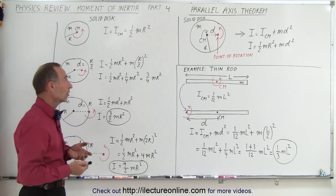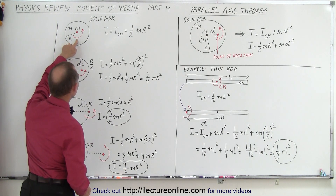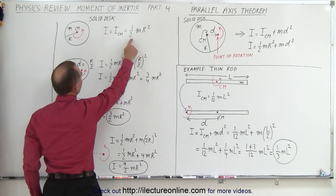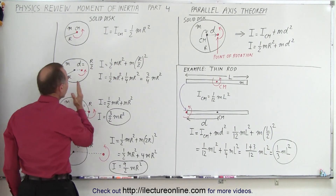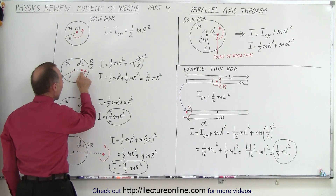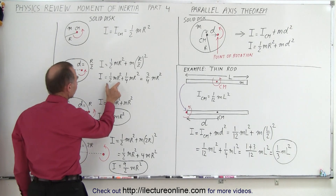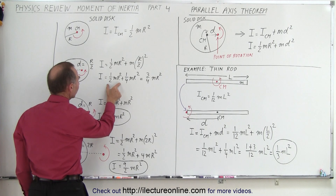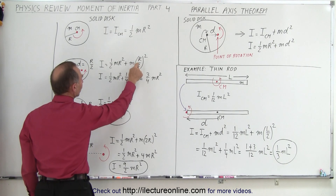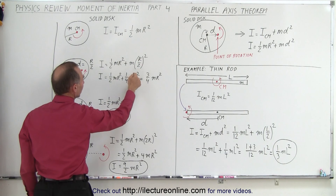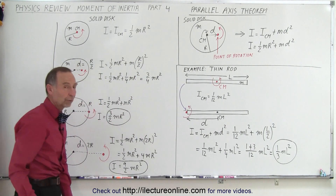Let's apply it now to a solid disk. Here we have a solid disk rotating about its center of mass, therefore the moment of inertia is one half mr squared. But what if we move a distance d — in this case d is half the radius? We take the moment of inertia at the center of mass plus the mass times the distance we moved squared: r over two squared becomes one quarter r squared. Add them together, we get three quarters mr squared.